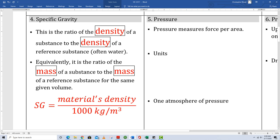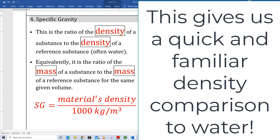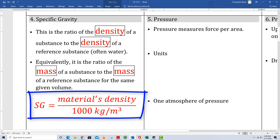Specific Gravity. This is the ratio of the density of a substance to the density of a reference substance, which is usually water. Equivalently, it's the ratio of the mass of a substance to the mass of a reference substance for the same given volume. There's the equation for specific gravity.